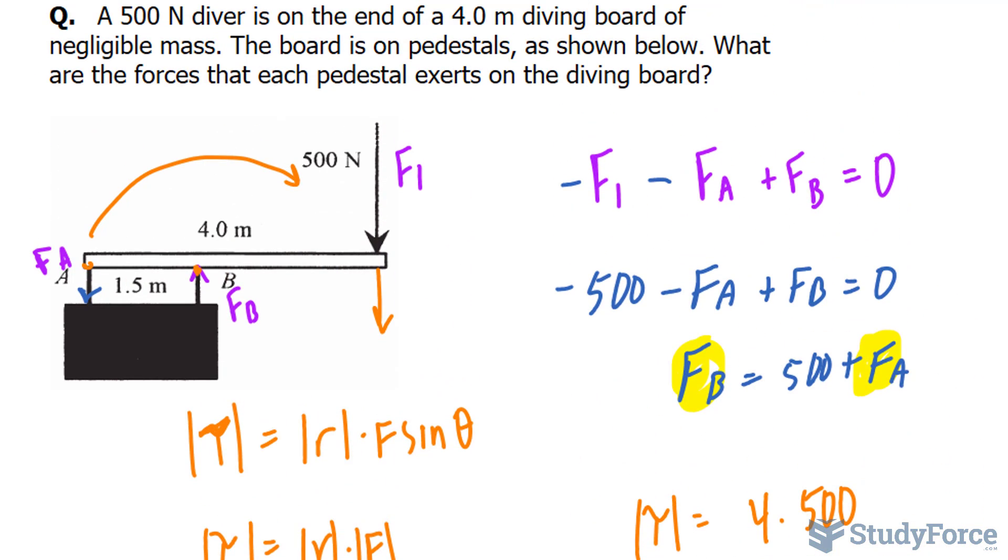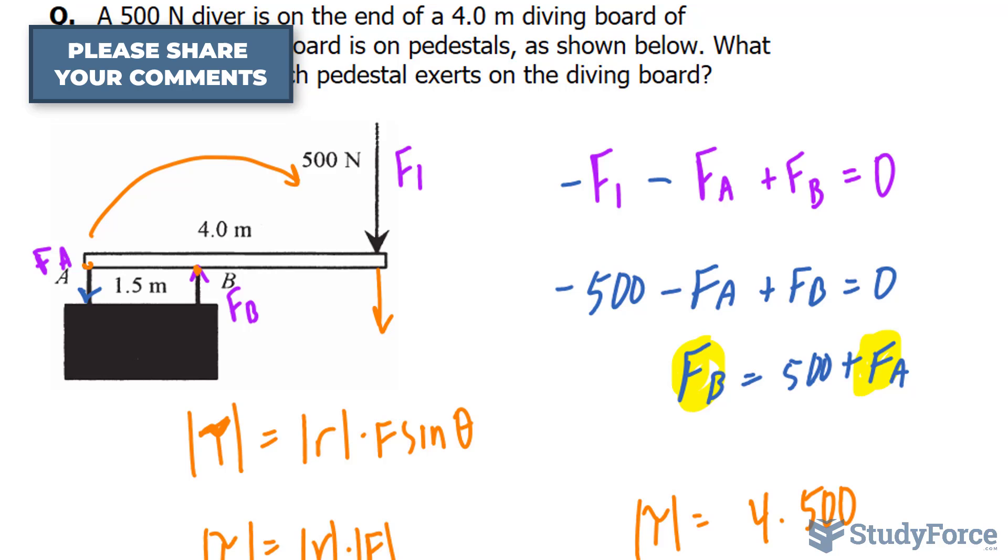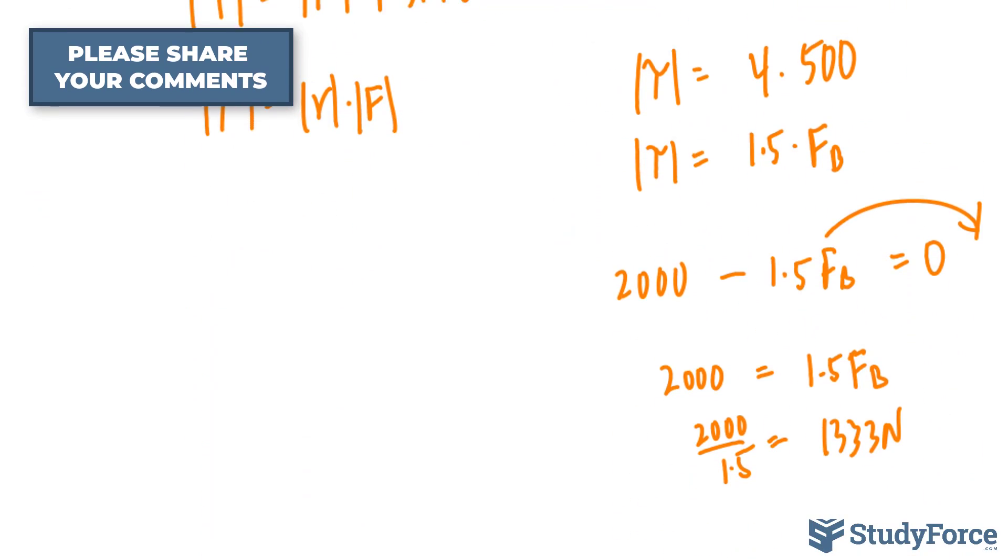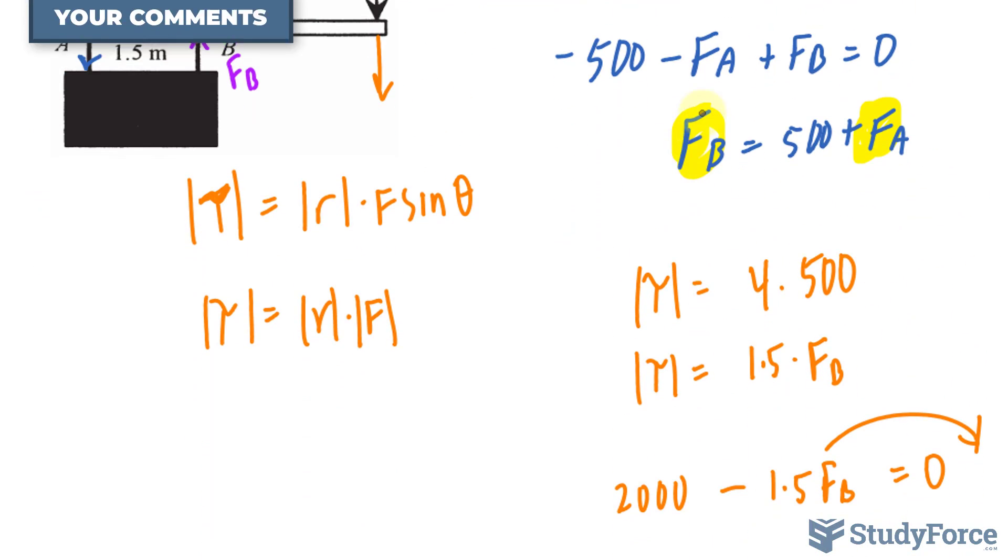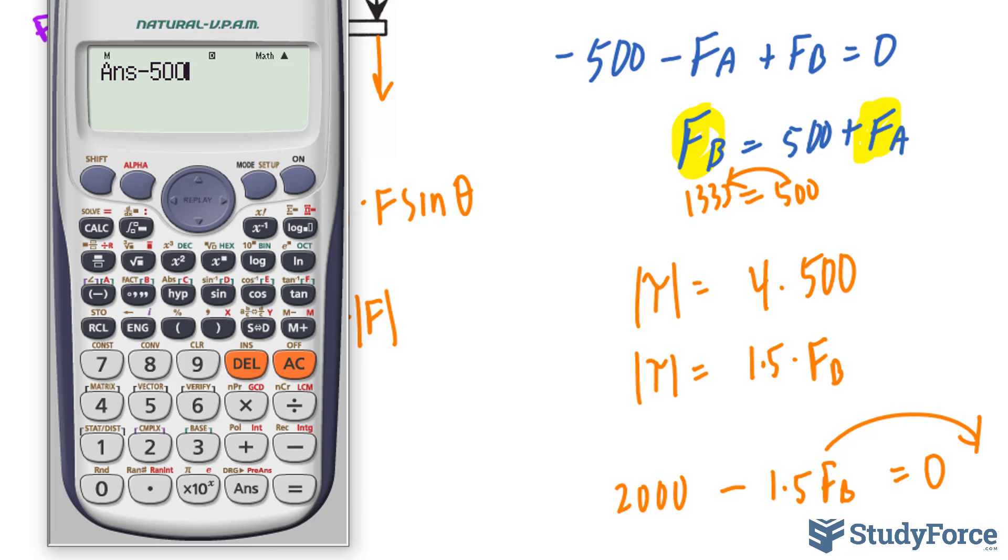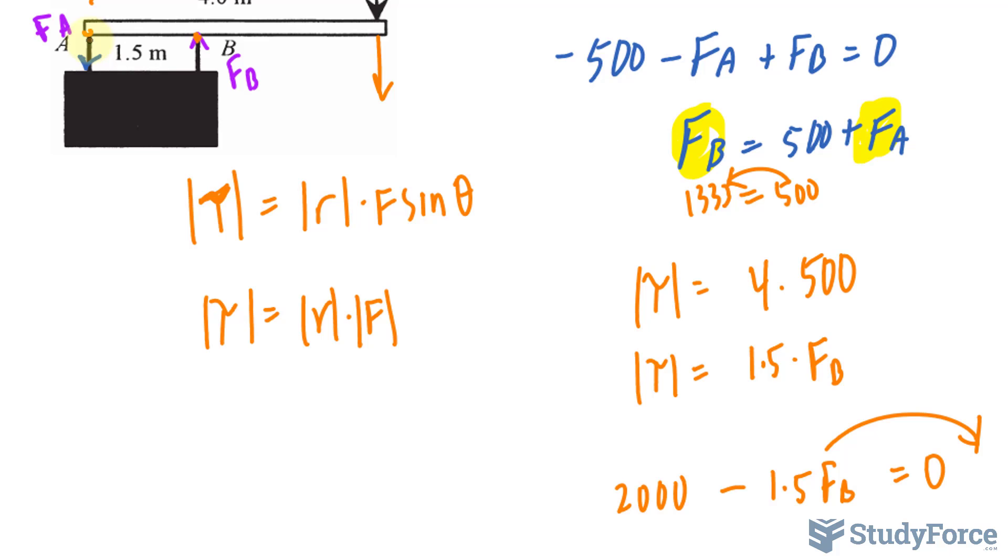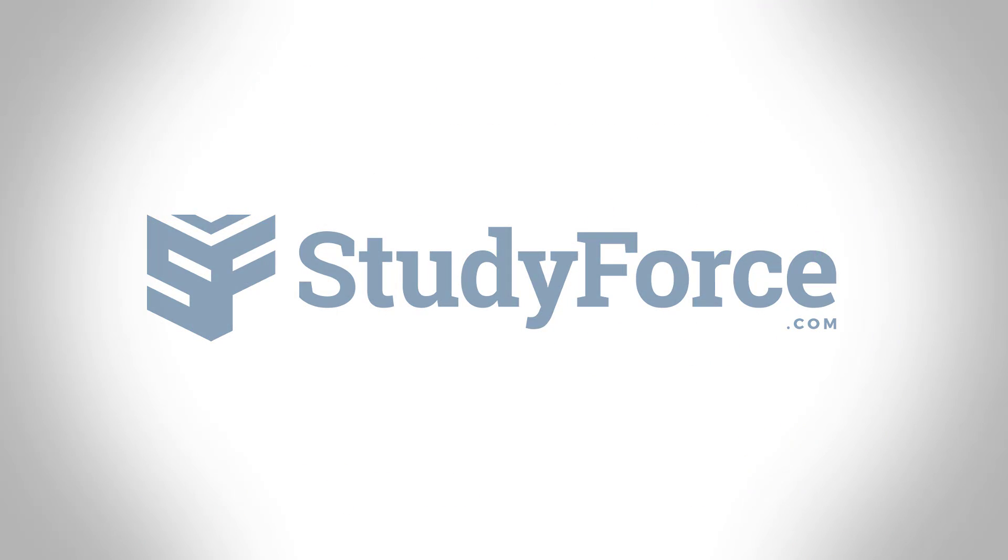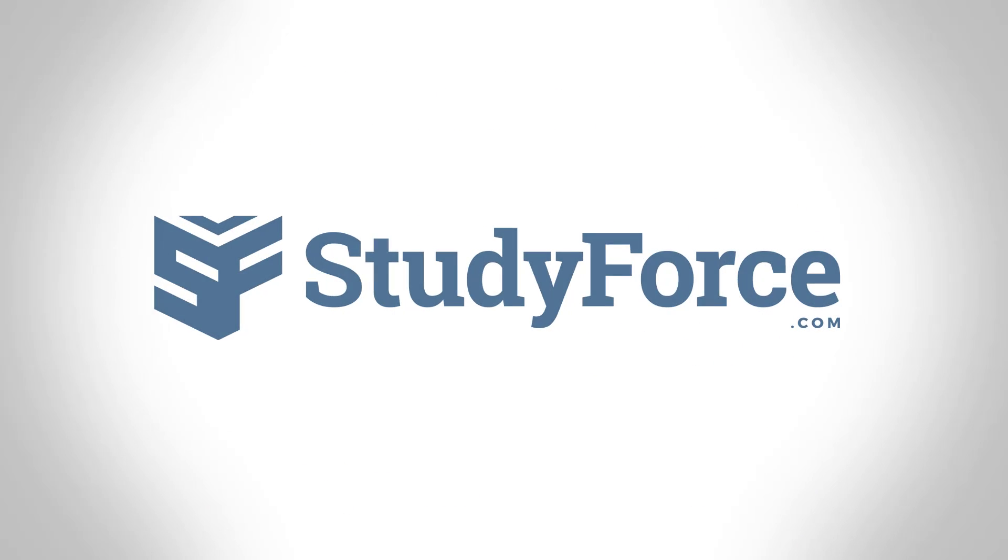And from here, we can find out the force at F sub A by taking that value, throwing it into there, and bringing 500 over, so I'll subtract 500 from that, and we get a force of 833.3 acting right there. And there you have it. That is how to find the forces acting on a diving board.